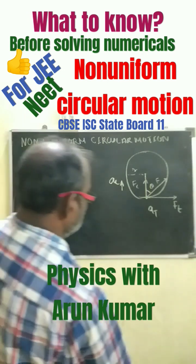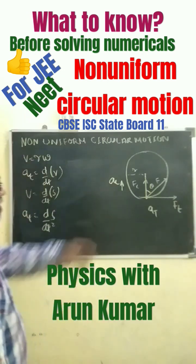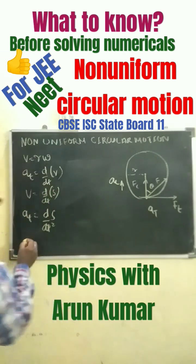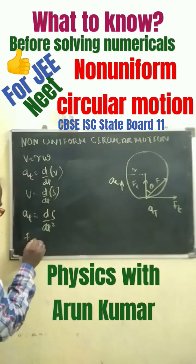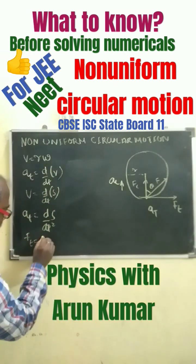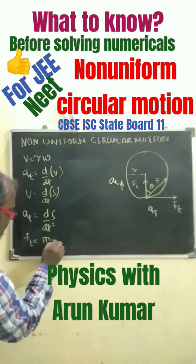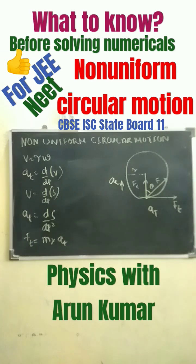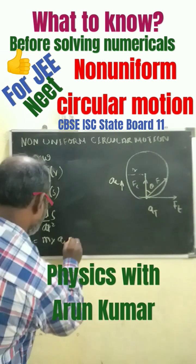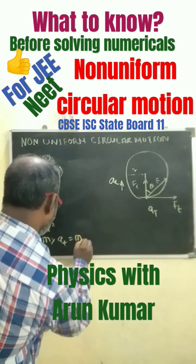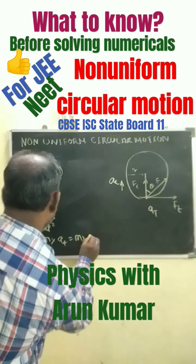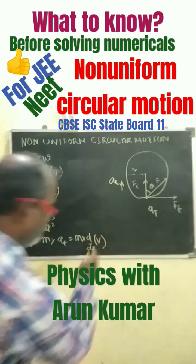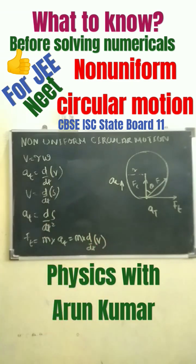This is what we call tangential acceleration. Hence the tangential force, F_t, equals mass times tangential acceleration, which we write as m·(dv/dt).